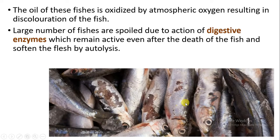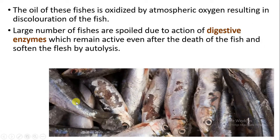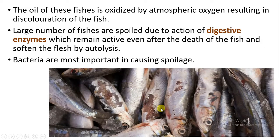A large number of fish are spoiled in this way through chemical action. The second action is the digestive enzymes. Because of their action, the autolysis process takes place soon. Autolysis ka matlab hai — the digestion of the cell by its own enzymes takes place. And this is how the decomposition process starts soon. Bacteria is one of the main causes of spoilage in fish.